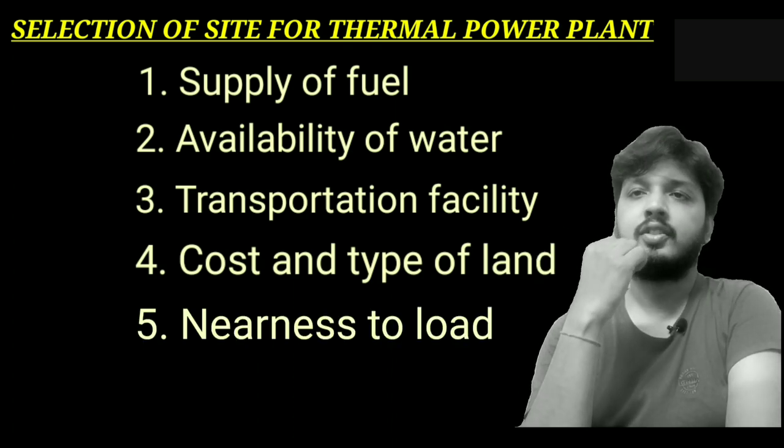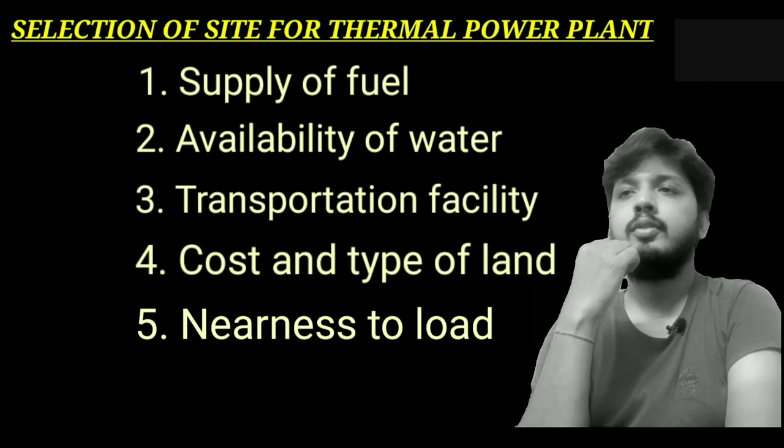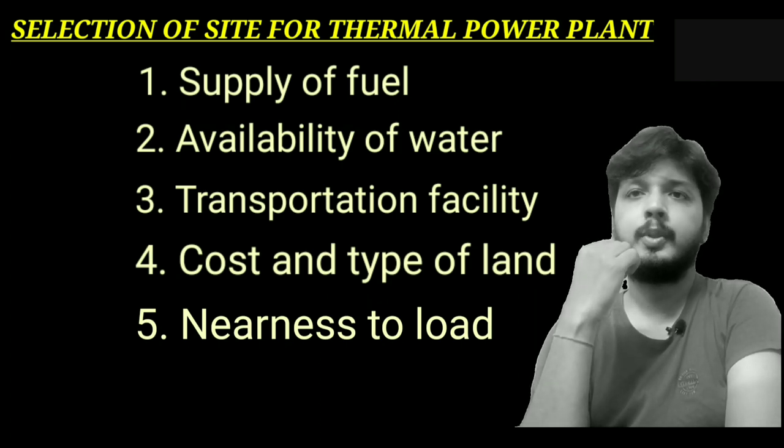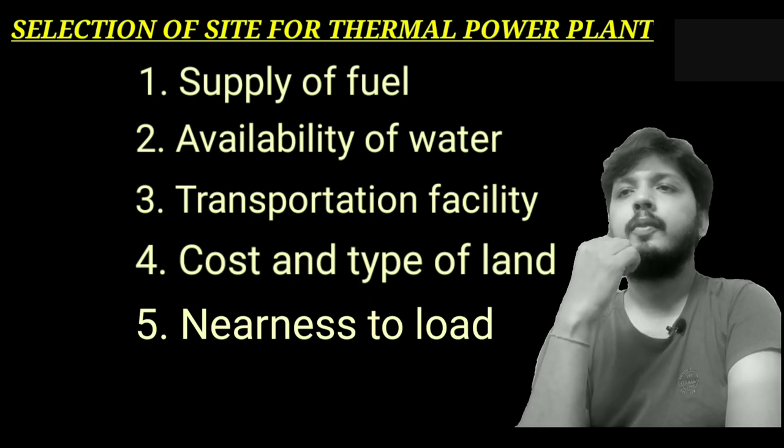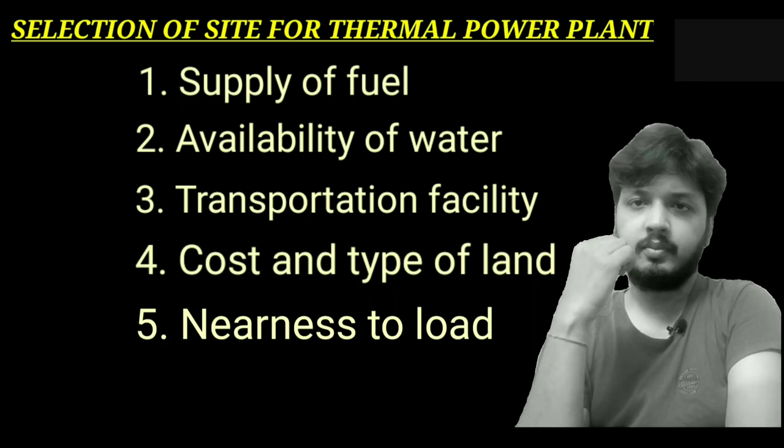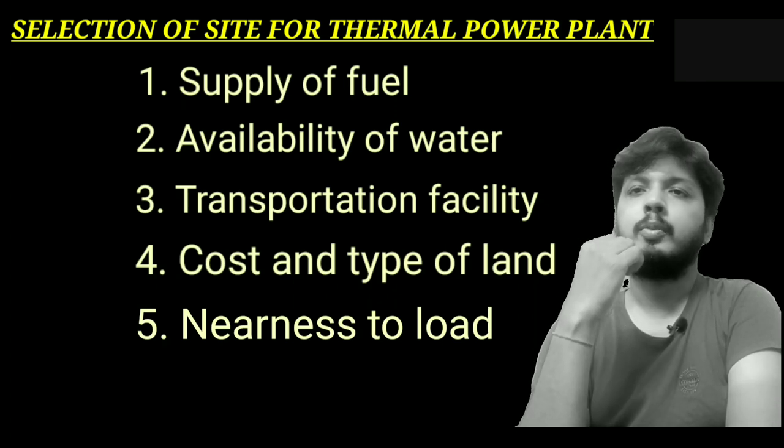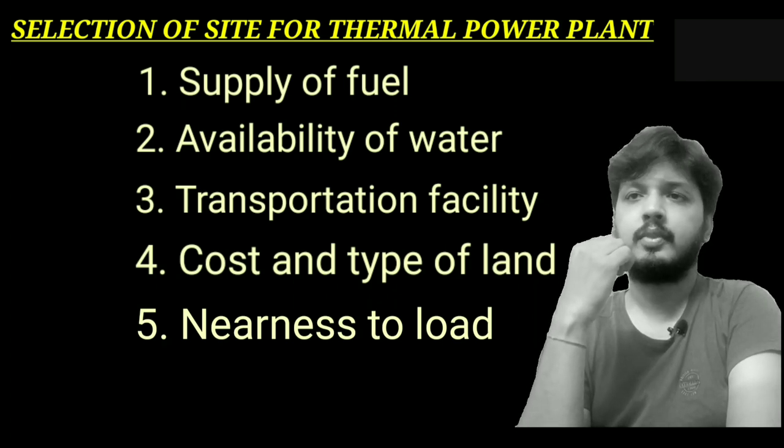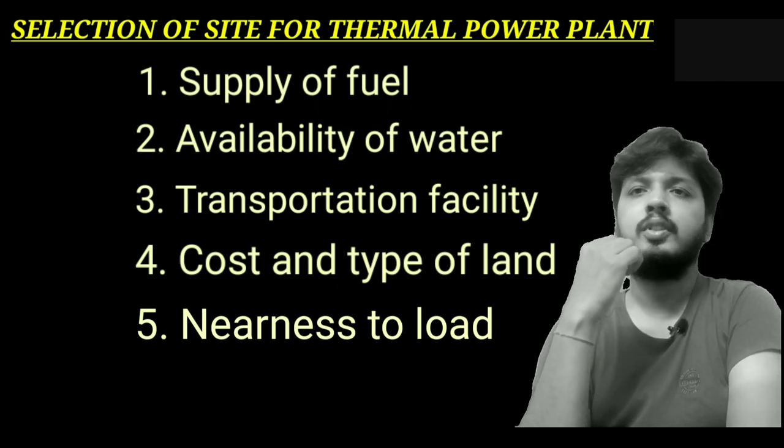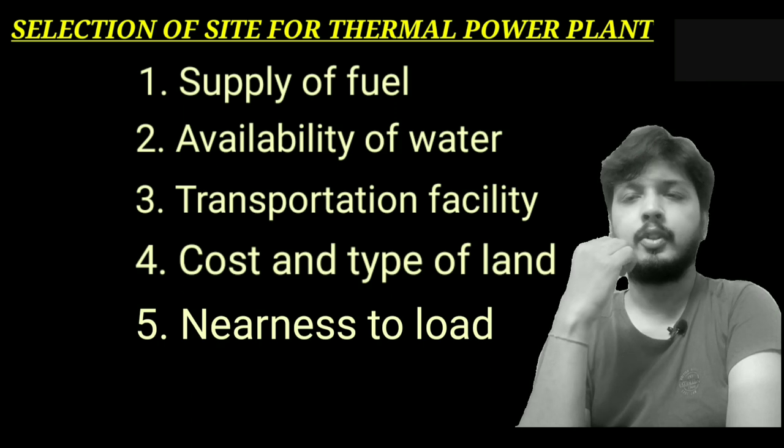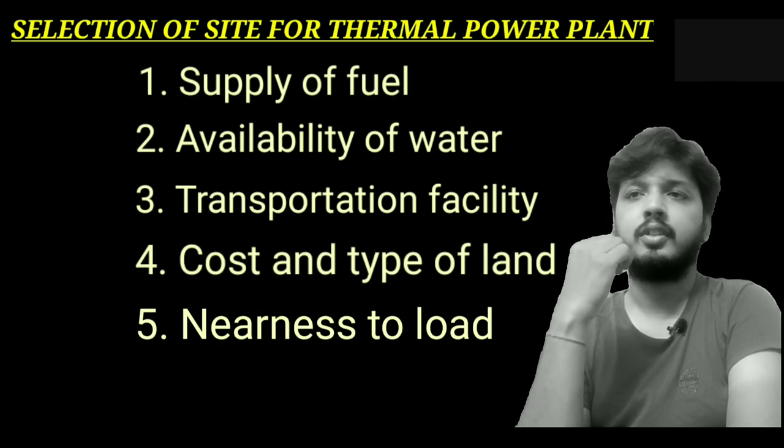Next point is nearness to the load. In order to reduce transmission cost, the plant should be located near the center of the load. This is particularly important for DC systems. However, if AC is the transmission system, then transmission will happen at high voltage, consequently reducing the transmission cost. Therefore, it is possible to install a plant away from the load center provided other conditions are favorable for AC.